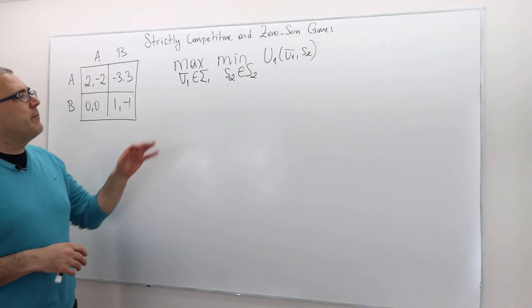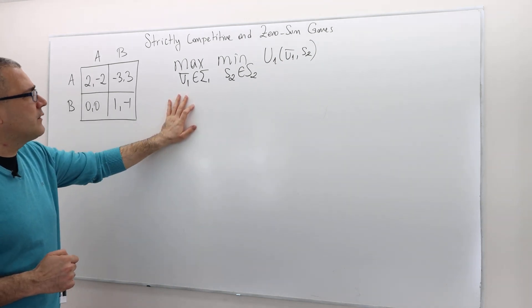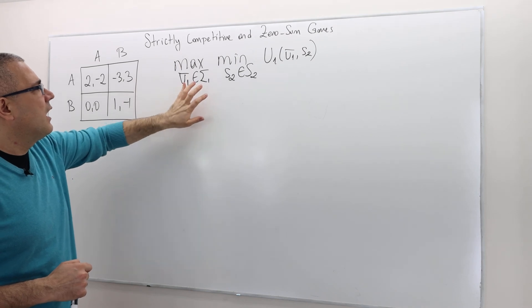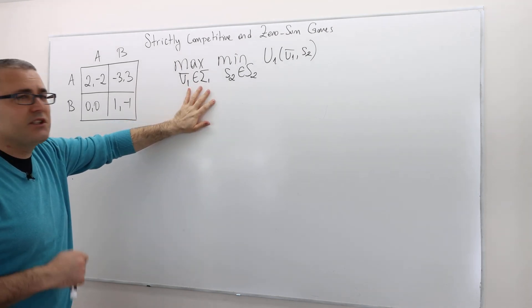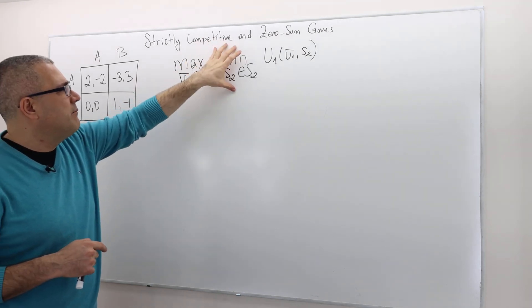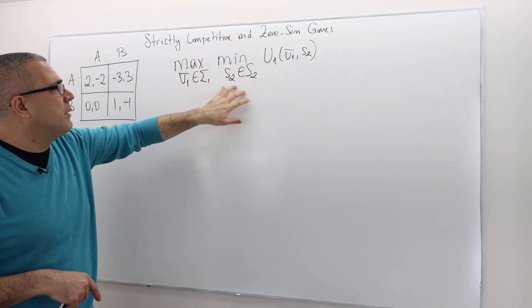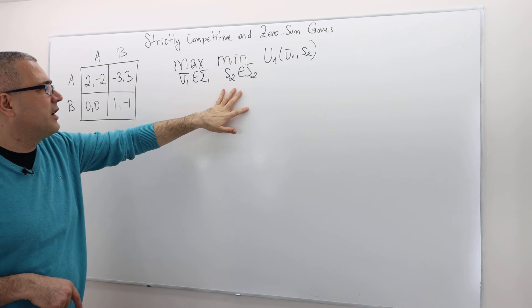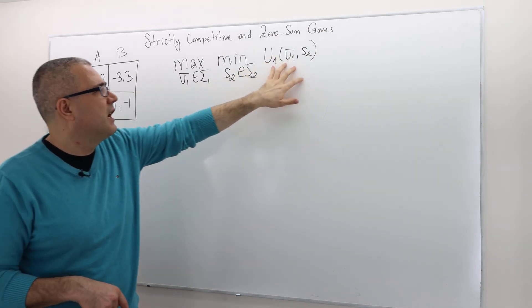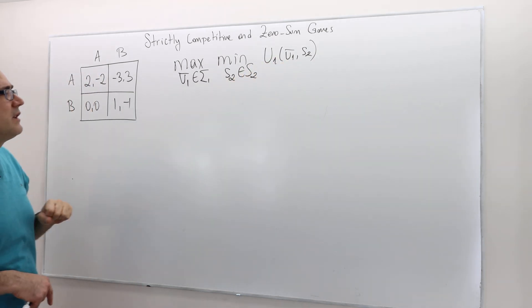So what is the max-min value for player one? He's maximizing by choosing his strategy, his mixed strategy, and then minimizing - well, not then - I'm sorry, minimizing by choosing the second player's strategy in pure strategies while he's doing this to max-min for his own payoff.